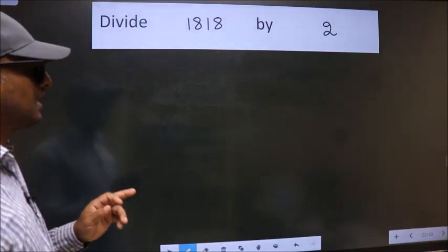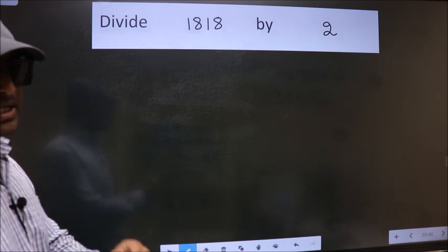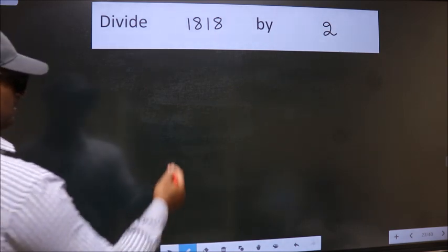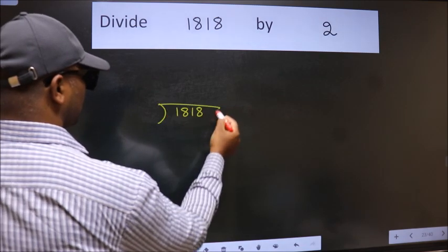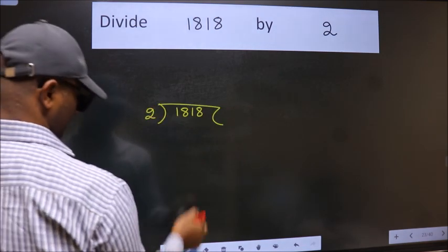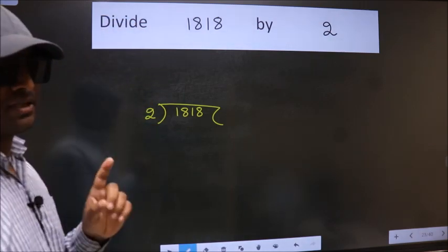Divide 1818 by 2. To do this division, we should frame it in this way. 1818 here, 2 here. This is your step 1.